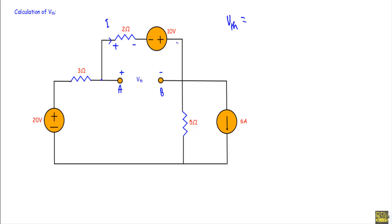V_th will be equal to minus I × 2 plus 10, because the 2Ω resistance and the 10V voltage source are sharing opposite polarity. So V_th = −I × 2 + 10.